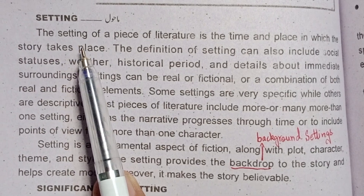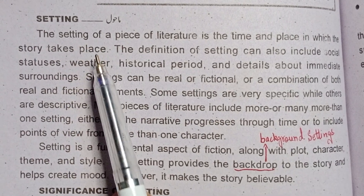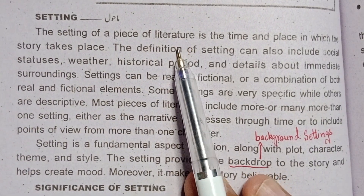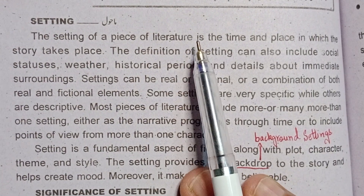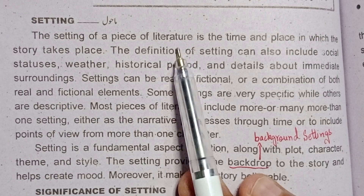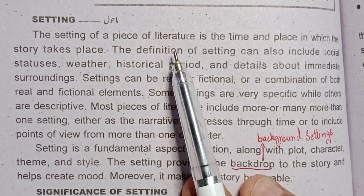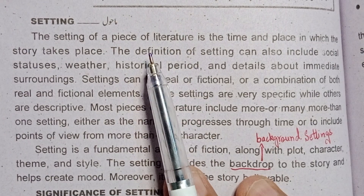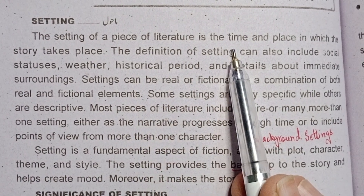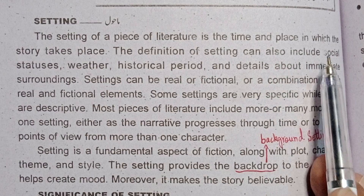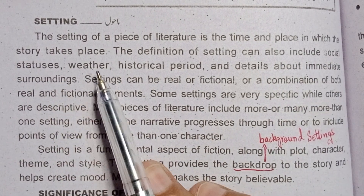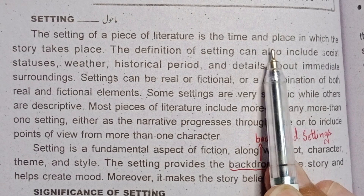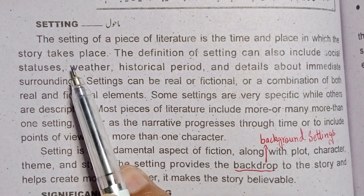What is the setting of a piece of literature? Literature is a written work — novel, drama, poetry. The setting is the time and place in which the story takes place.